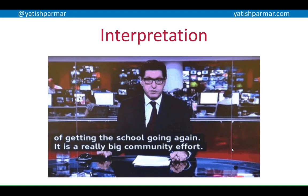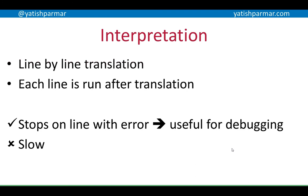Interpretation is a bit like watching live subtitling, or the people in the UN — they listen to a sentence and then translate it line by line. That's exactly what's happening with this type of translation on a computer. An interpreter takes a line of source code, translates it, and then runs it. The advantage is that it stops on the line with the error, which is quite useful for debugging. You're running your program, you get a weird result, it stops on that line, and you know where the error is.